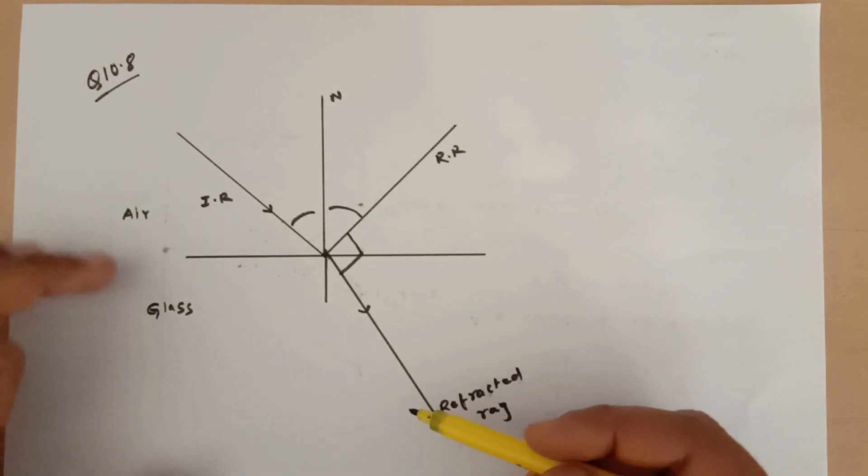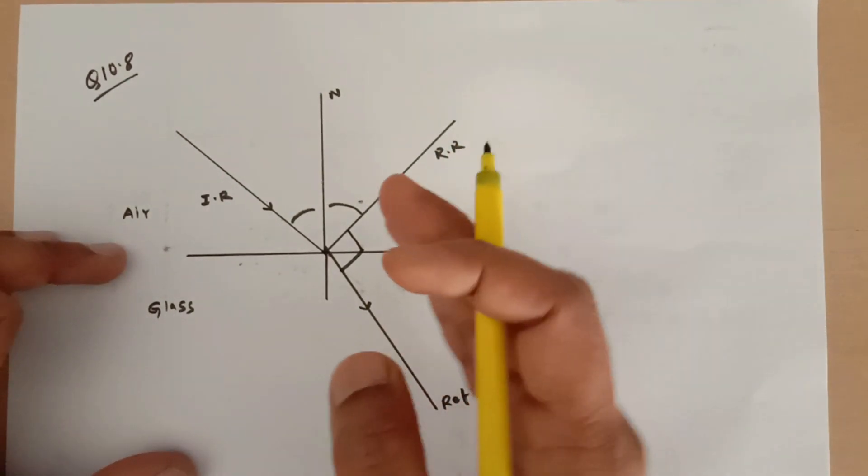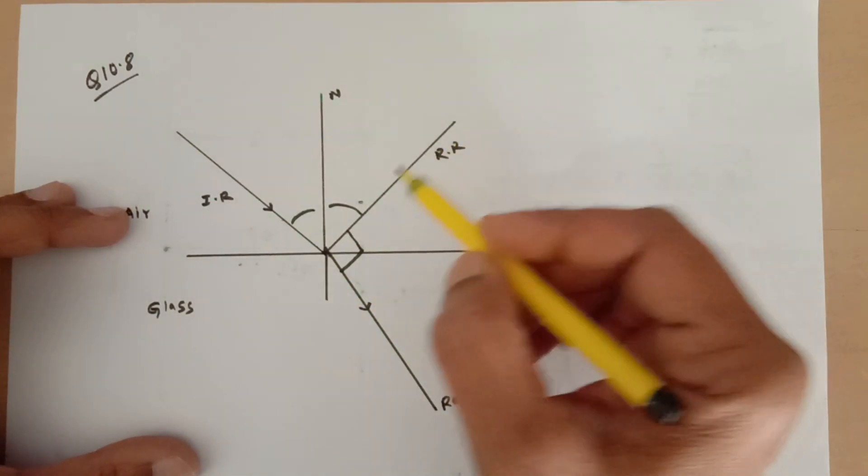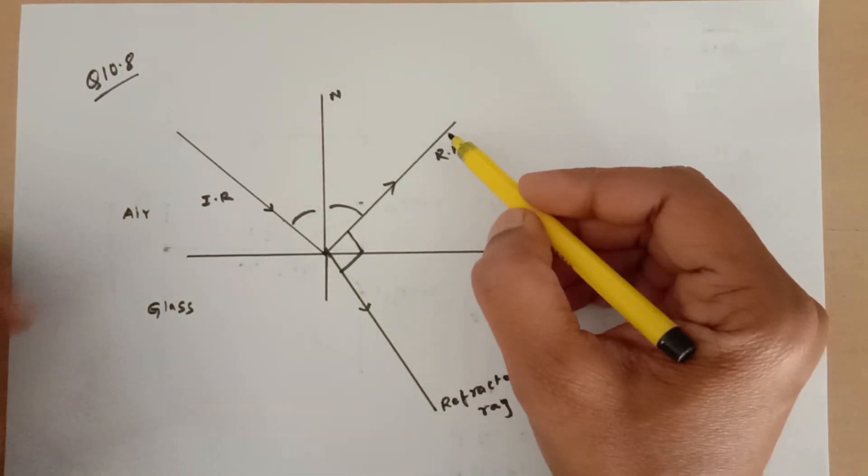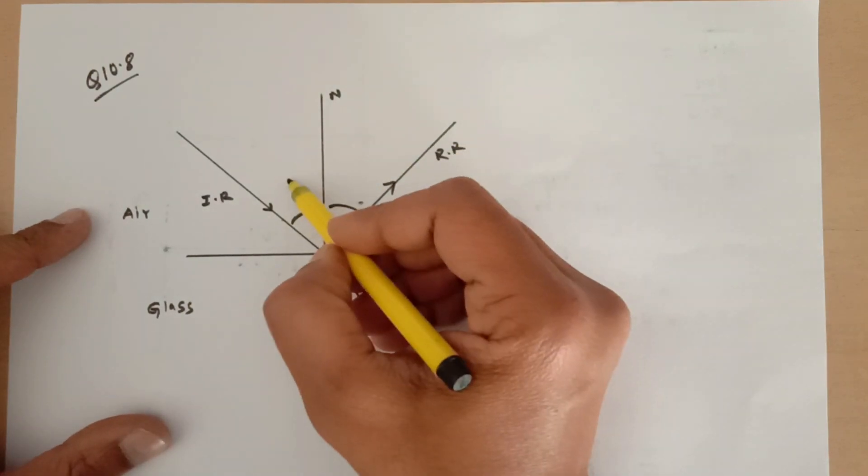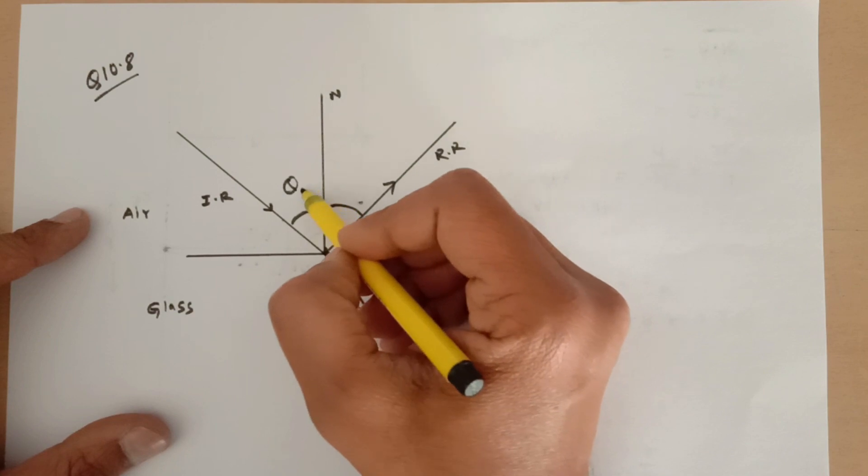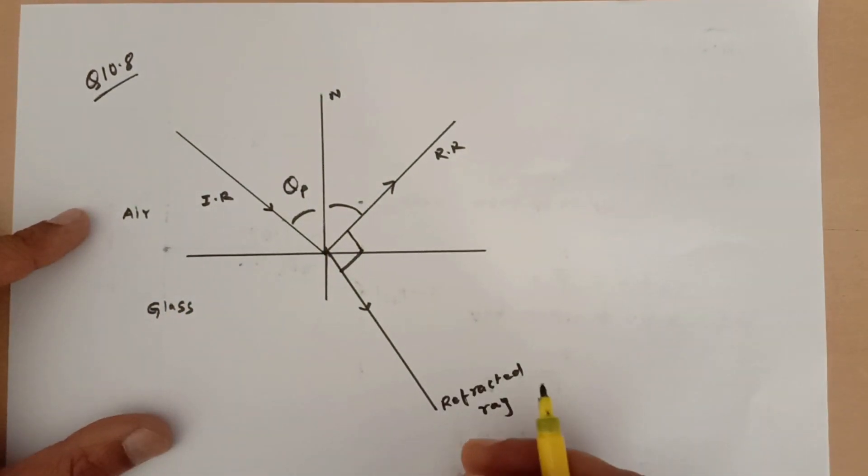Of course it is going to refract, it will bend towards the normal. But we also know that about 4% of the light gets reflected. So this is the reflected light. But at a special angle of incidence, which is known as the Brewster's angle, or it is also represented by theta p, angle of polarization.